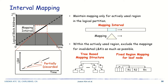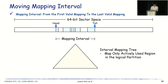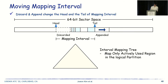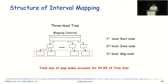This is an overview of interval mapping, a space-efficient mapping structure for the infinite logical partition. Interval mapping only maps the actively used region in the logical partition. The actively used region can partially include invalid mappings. To exclude mappings for invalid LBAs, interval mapping is designed as a tree-based mapping structure. In a leaf node of the tree, we apply a new mapping scheme named fixed region mapping to reduce the memory footprint. The figure shows the mapping interval and interval mapping tree. The interval mapping tree only maps the mapping interval. By discard and append, the mapping interval is updated and moves toward higher LBAs, and the interval mapping tree is updated accordingly.